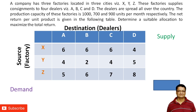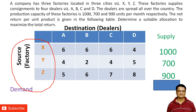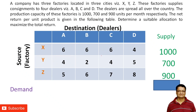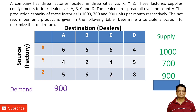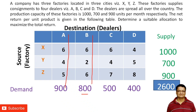There are three source factories X, Y, Z and four destinations A, B, C, D. The capacity of source X is 1000 units, source Y is 700 units, and source Z is 900 units. The demand at dealer A is 900, dealer B is 800, dealer C is 500, and dealer D is 400. The second check is whether the problem is balanced or unbalanced.